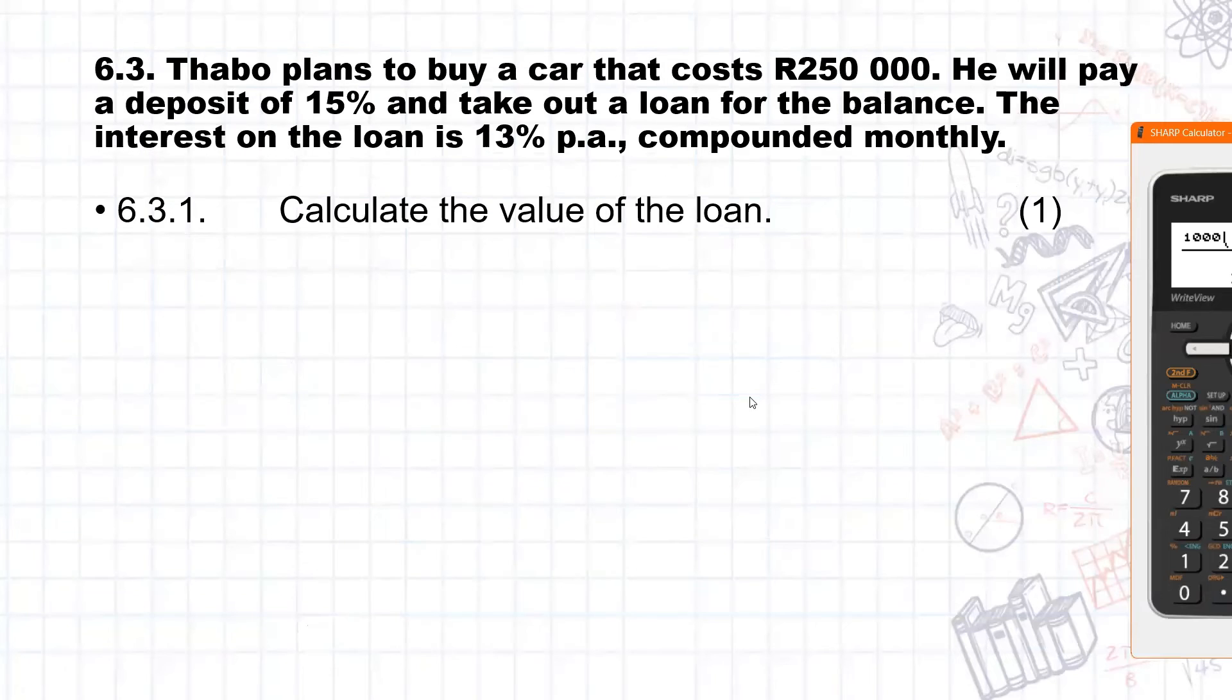Let's move on to 6.3. So 6.3 says Tabo plans to buy a car that costs R250,000. He will pay a deposit of 15% and take out a loan for the balance. The interest on the loan is 13% per annum compounded monthly.